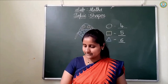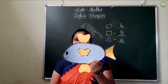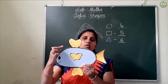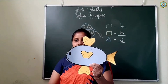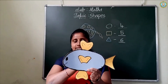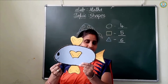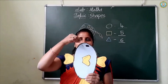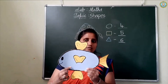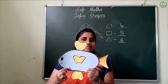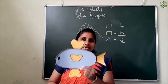Now comes our next shape. See here, children. Which shape is this? This is an oval. The oval shape comes from the outline of an egg. Okay, this is an oval. Repeat after me — which shape is this? Oval. Okay, children, say bye-bye oval.